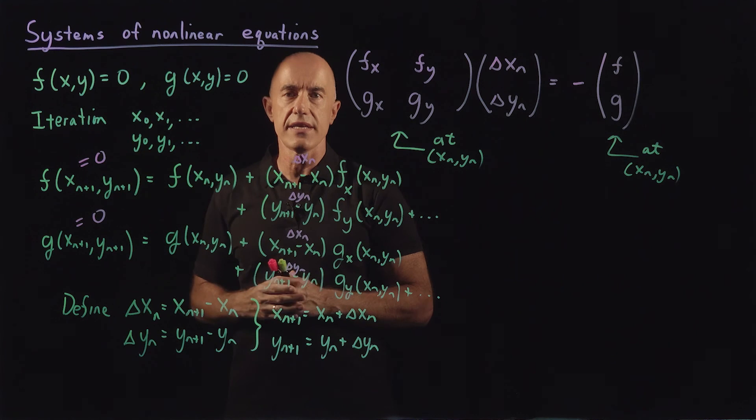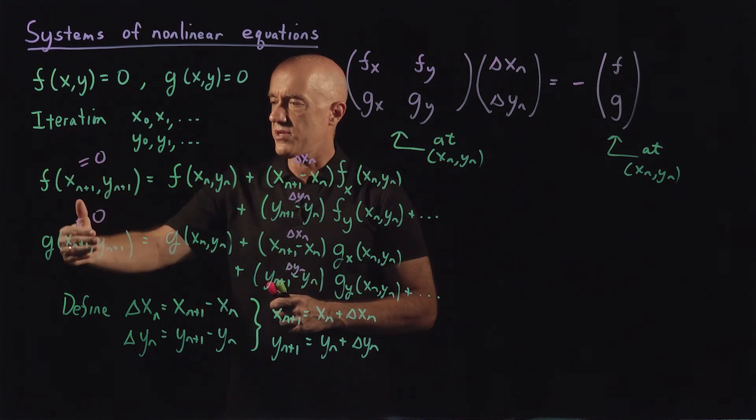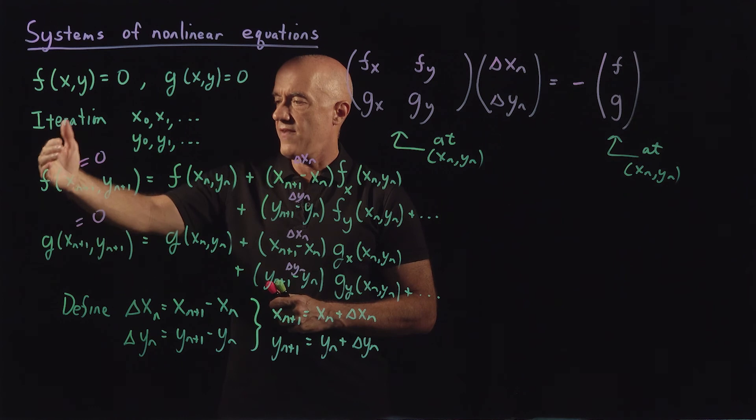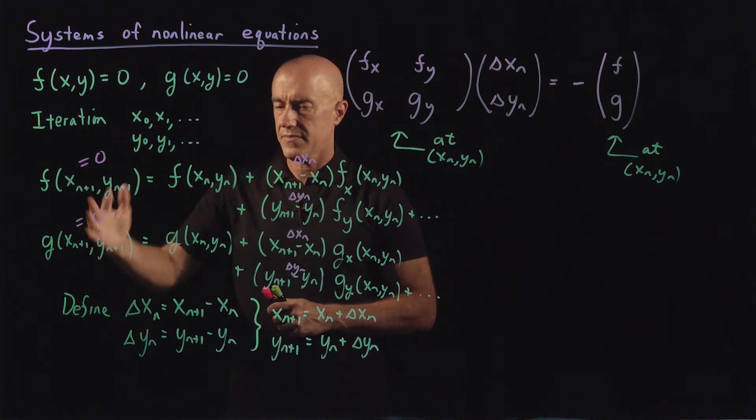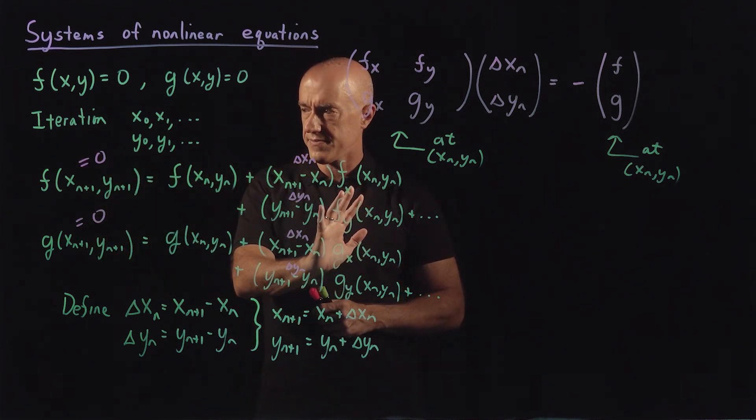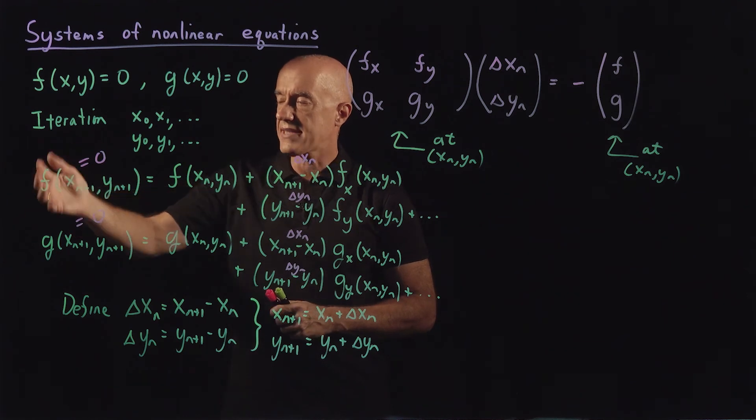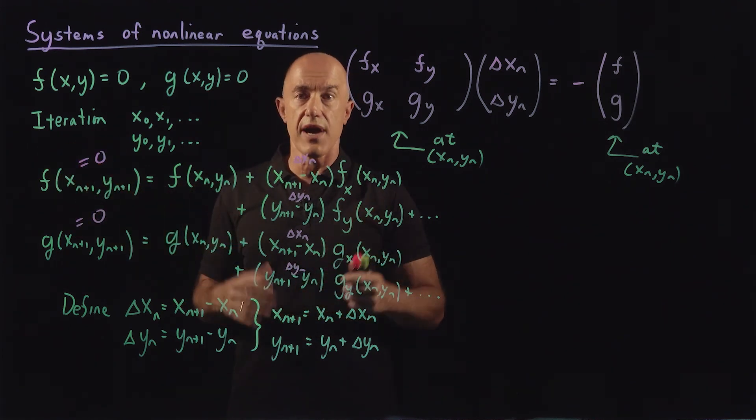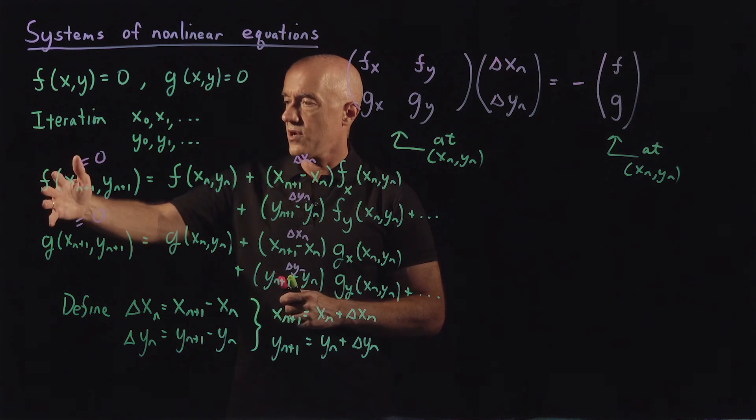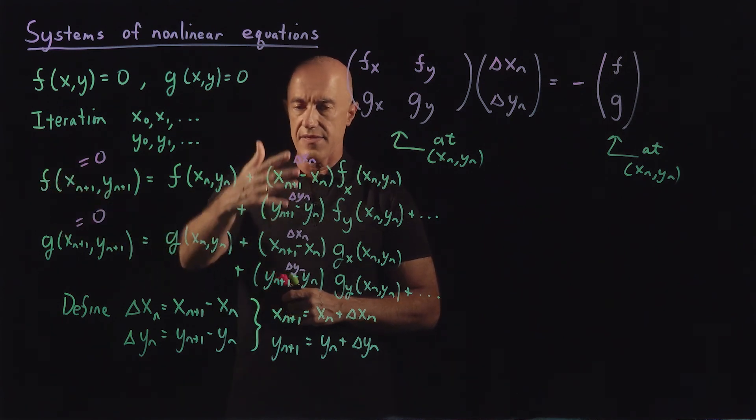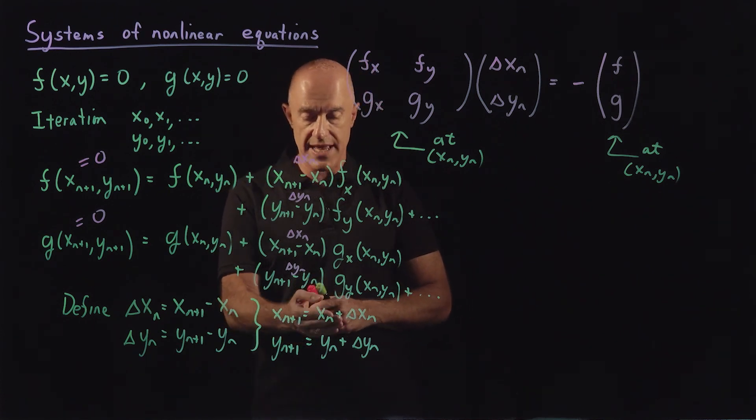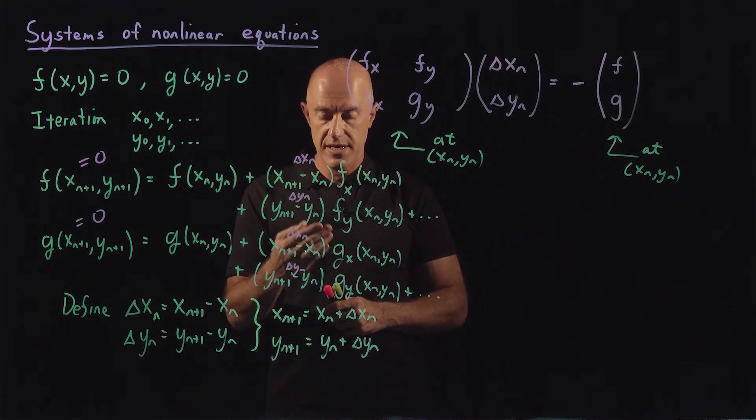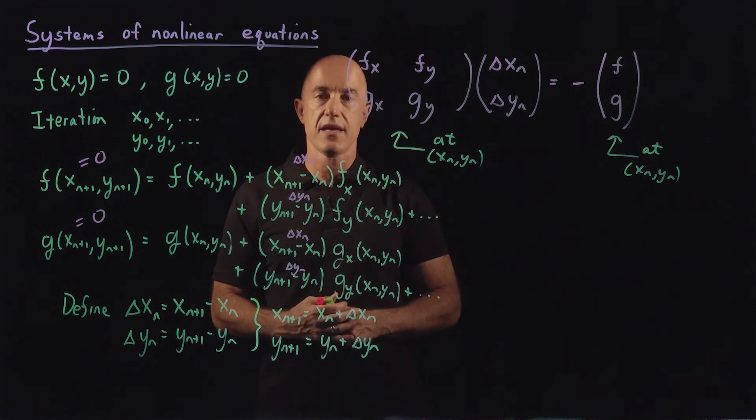In order to determine what is this iteration scheme, we do a Taylor series expansion of f and g at the xn plus 1, yn plus 1 iteration. This is the Taylor series. And we want xn plus 1 and yn plus 1 to be a good approximation to the root. So the left hand side becomes 0. And then this becomes an equation for our increment delta xn and delta yn. So xn plus 1 is xn plus delta xn. Yn plus 1 equals yn plus delta yn.